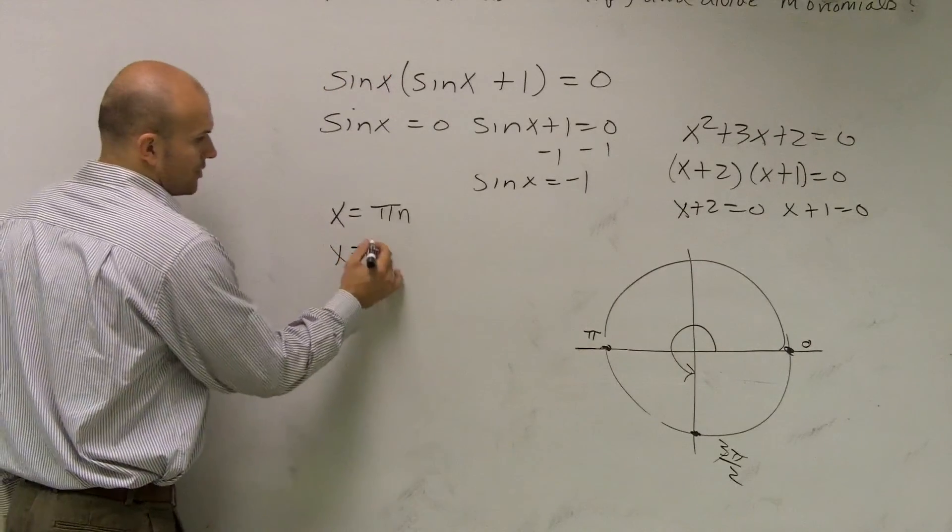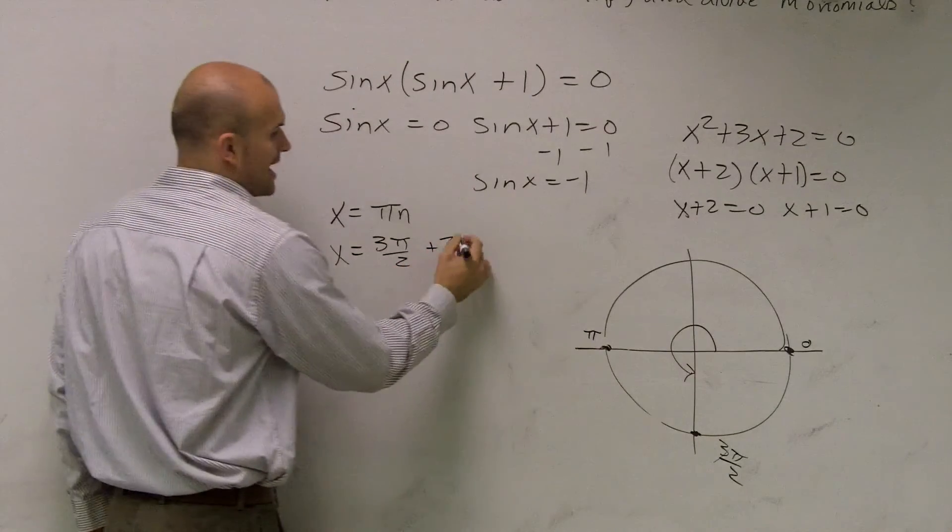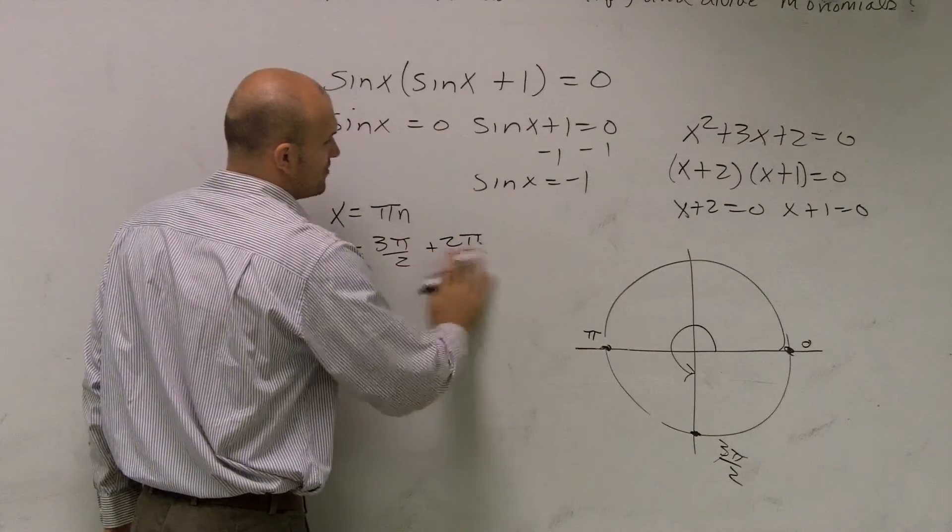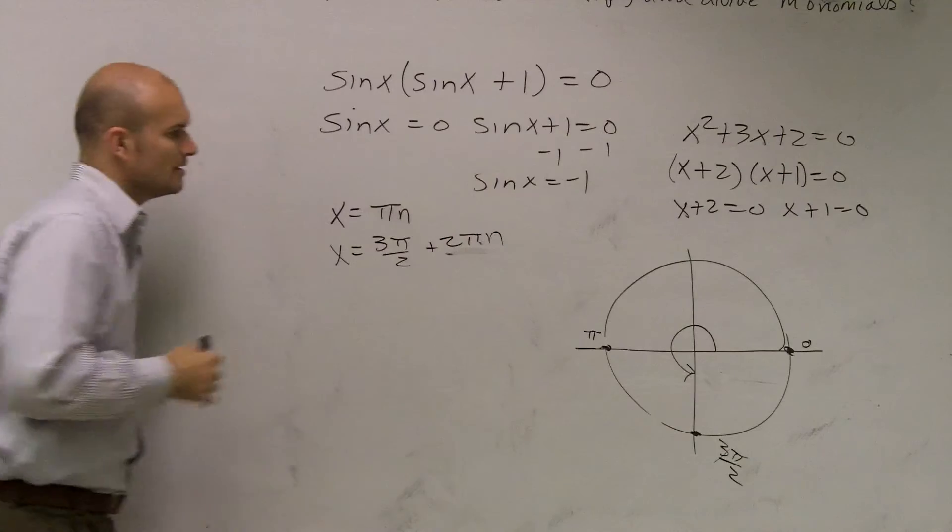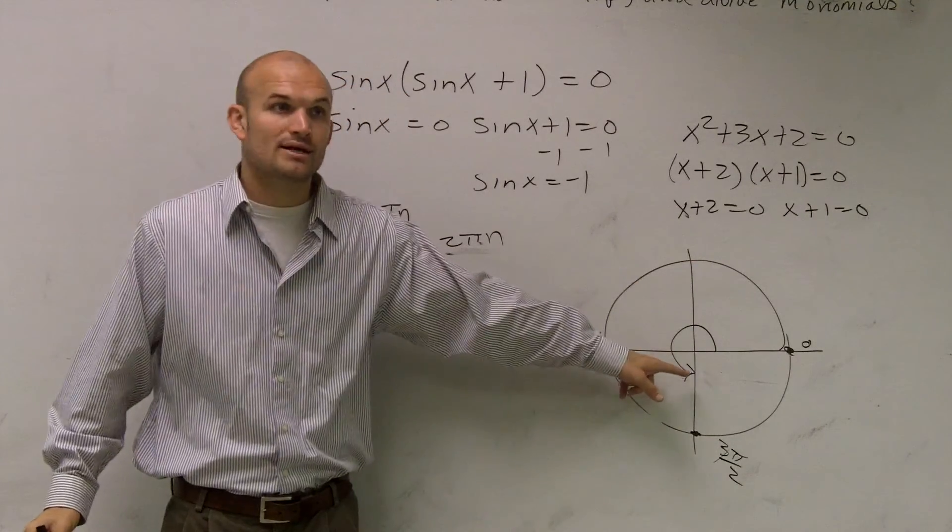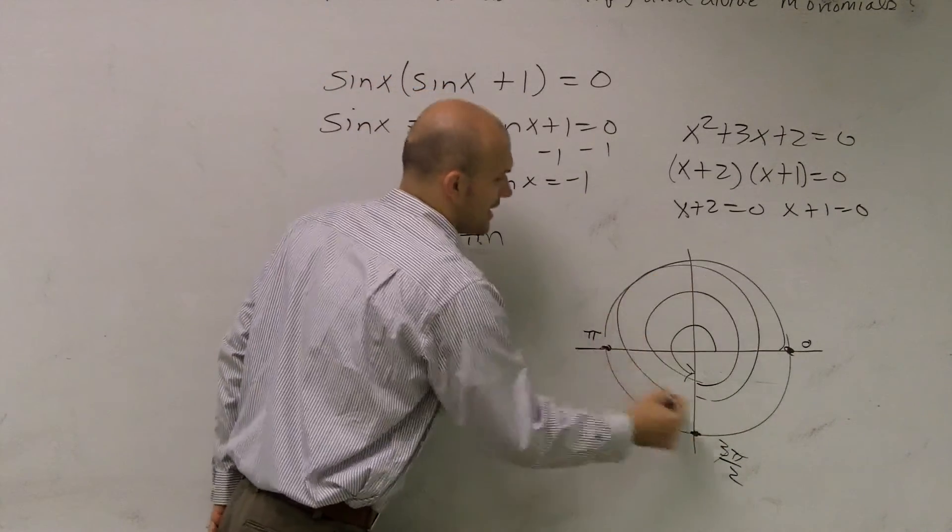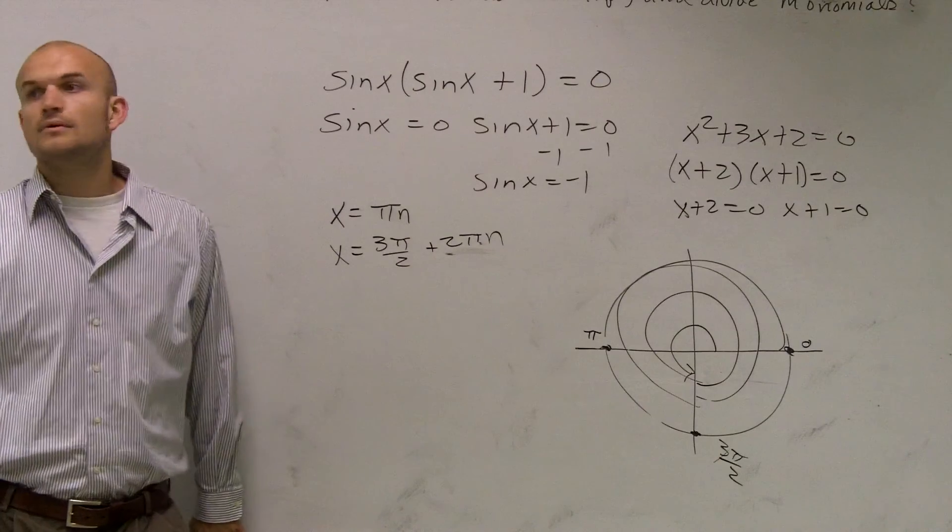The next one, x would equal 3π/2, but then that one you add plus 2π, so 3π/2 + 2πn. Because your first angle is here. Then, if you want to get to the next one, you add another 2π. Make sense?